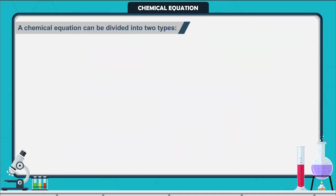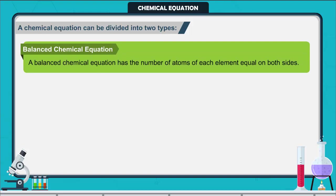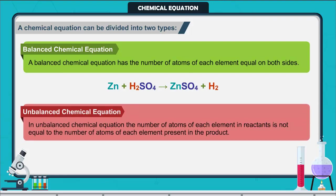A chemical equation can be divided into two types. First: Balanced chemical equation — a balanced chemical equation has the number of atoms of each element equal on both sides. For example, in an equation where numbers of zinc, hydrogen, and sulfate are equal on both sides, it is a balanced chemical equation. Second: Unbalanced chemical equation — if the number of atoms of each element in reactants is not equal to the number in the products, then it is called an unbalanced chemical equation, as the atoms are not equal on both sides.